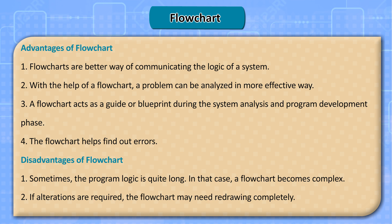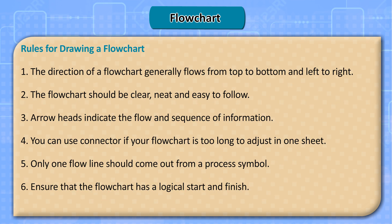Disadvantages of a flowchart: One, sometimes the program logic is quite long, in which case a flowchart becomes complex. Two, if alterations are required, the flowchart may need to be redrawn completely. Rules for drawing a flowchart: One, the direction generally flows from top to bottom and left to right. Two, the flowchart should be clear, neat, and easy to follow. Three, arrowheads indicate the flow and sequence of information. Four, use a connector if your flowchart is too long to fit on one sheet. Five, only one flow line should come out from a process symbol. Six, ensure that the flowchart has a logical start and finish.